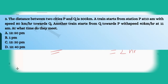The distance between two cities P and Q is 300 kilometers. A train starts from station P at 10 a.m. at a speed of 10 km/h towards Q. Another train starts from Q towards P at a speed of 40 km/h at 11 a.m. At what time do they meet? Options: 12:50 PM, 1:00 PM, 12:20 PM, or 12:40 PM. Please give your answer in the comment section.